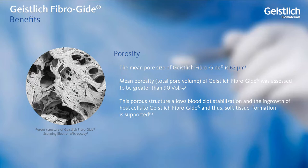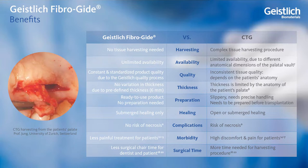The porous structure allows Geislik FiberGuide to quickly stabilize the blood clot, and in doing so, provides a nutrient-rich scaffold for fibroblast ingrowth and proliferation. As the matrix slowly gets replaced by native soft tissue, volume is maintained. Compared to sub-epithelial connective tissue grafts, Geislik FiberGuide provides an alternative whereby the patient will not need to undergo an additional tissue harvesting procedure. This saves the provider chair time and eliminates unnecessary patient anxiety, along with post-operative discomfort.